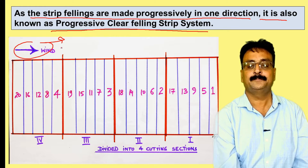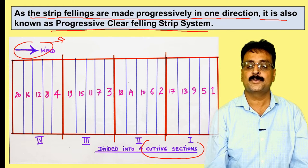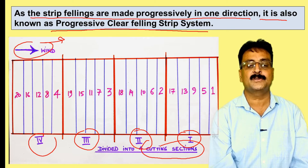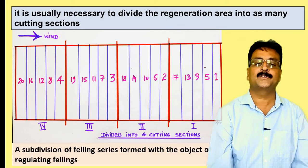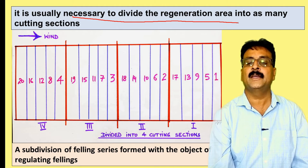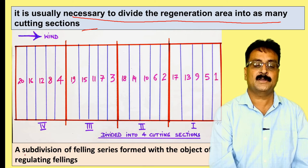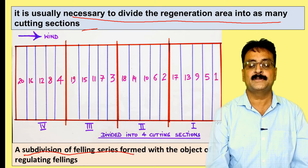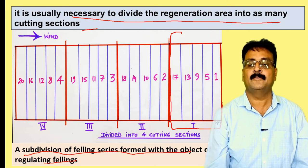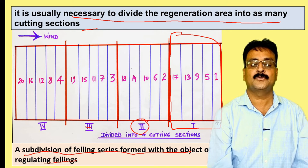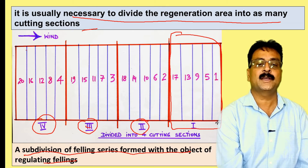It is usually necessary to divide the regeneration area into as many cutting sections as needed. A cutting section is a subdivision of a felling series formed with the objective of regulating felling. For example, if felling can be done in four years, the regeneration area is divided into four cutting sections — marked I, II, III, and IV — and felling proceeds against the wind direction.